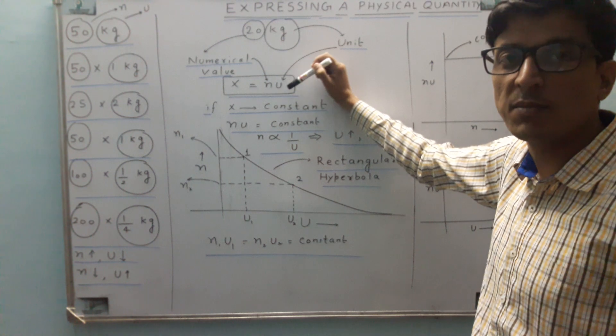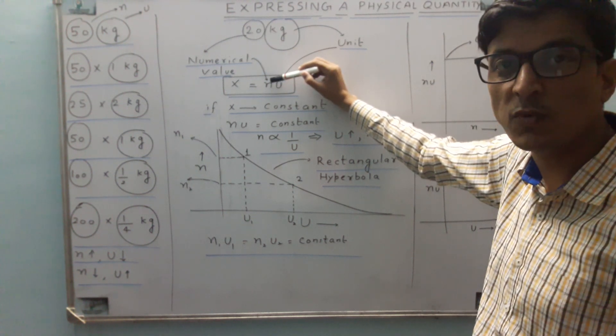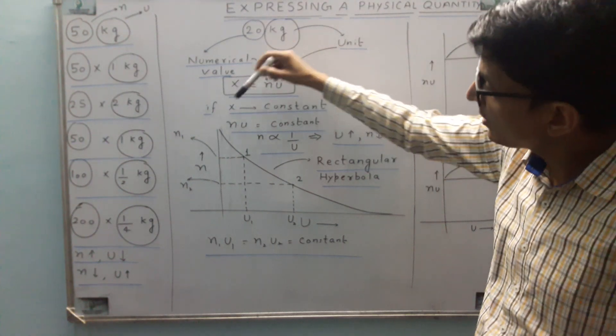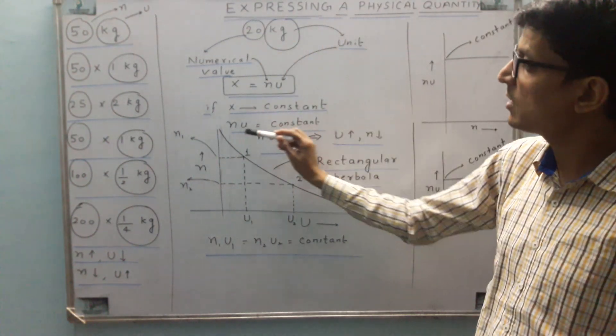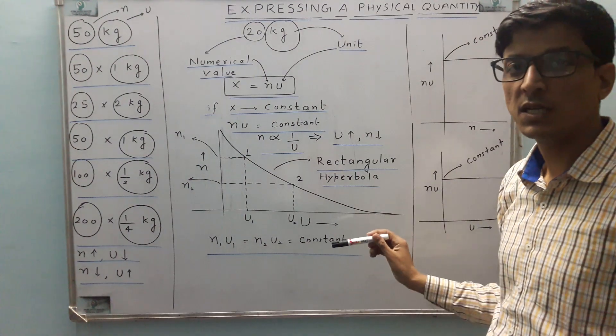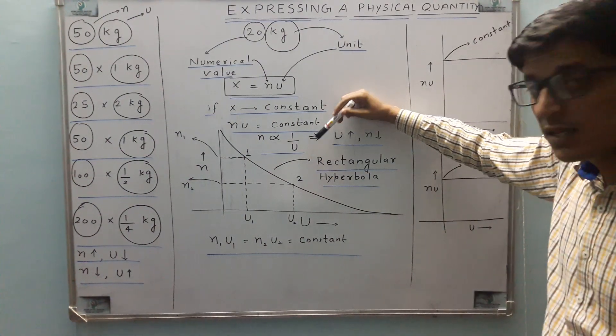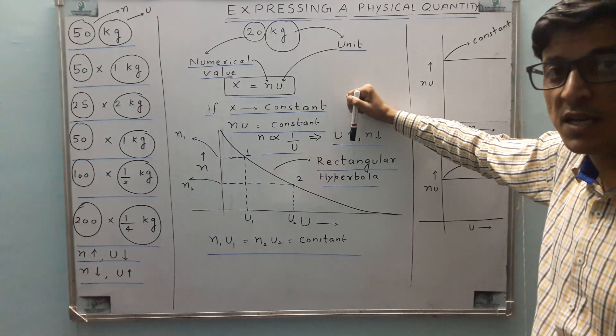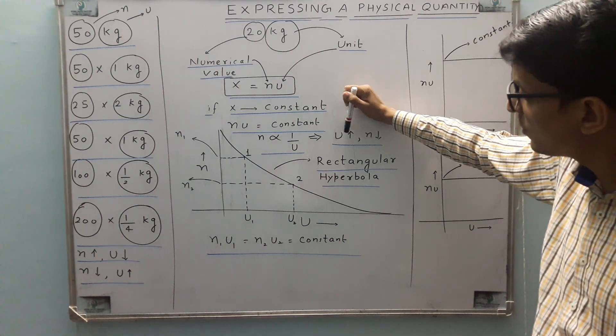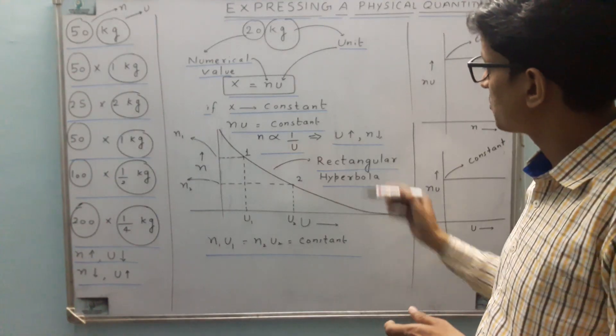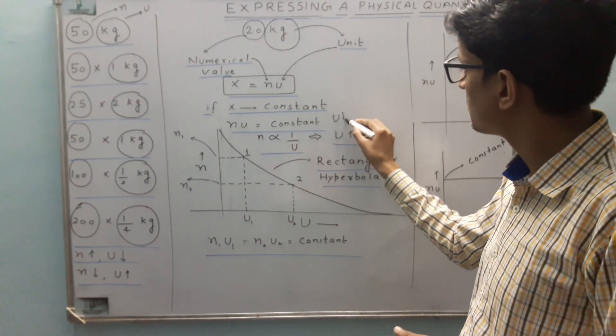Now if x is constant, that means n u will be constant, that means n will be proportional to 1 by u. So there is an inverse proportionality relation. That means if you increase u then n will decrease, and similarly if u decreases then n will increase.